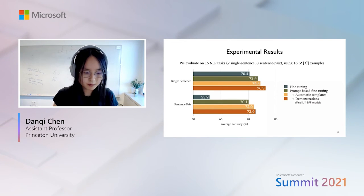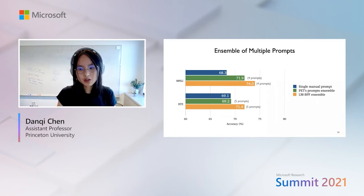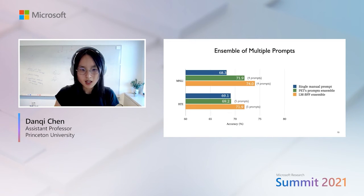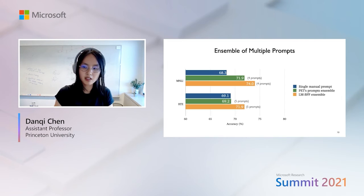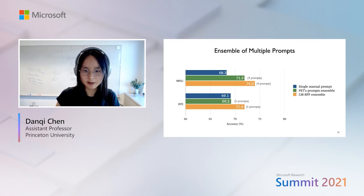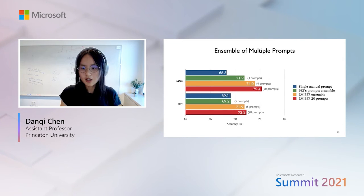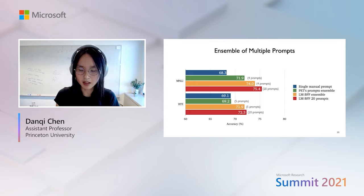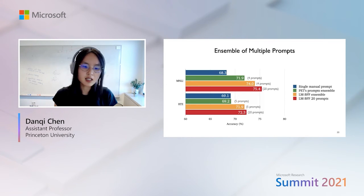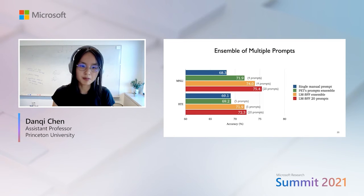We also consider an ensemble approach using multiple different prompts. Since our automatic prompt search can produce multiple templates easily, we compare ensembling many prompts together. This yields clear improvements, and continuing to increase the number of templates — up to 20 — further improves the results, thanks to the automatic prompt search process.